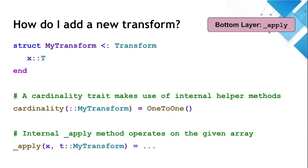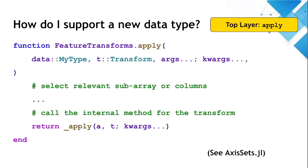As an illustration, this is what the bottom API looks like for defining a new transform. You just need to define the underscore apply method, as well as this cardinality. This makes use of some internal helper functions mapping it to the top layer. How you extend the top layer API depends on your use case, but all it involves is defining the apply method with the appropriate positional and keyword arguments to select the relevant subarray or columns or components, which then get passed to the bottom layer method. For an example of how we did this for non-native type, you might like to check out axis sets.